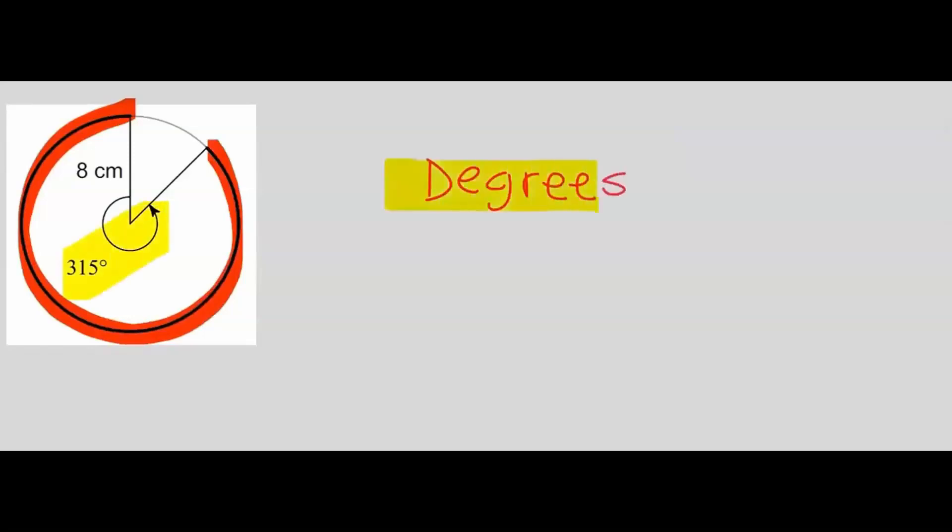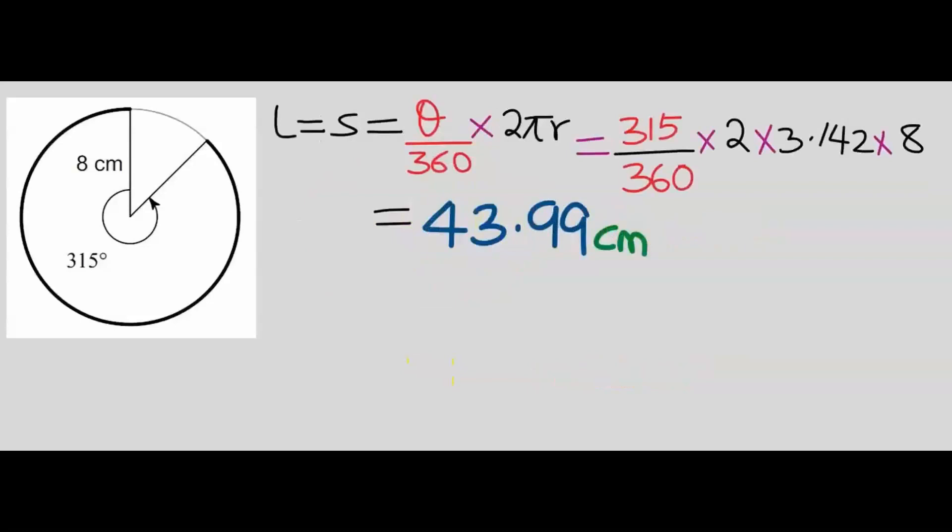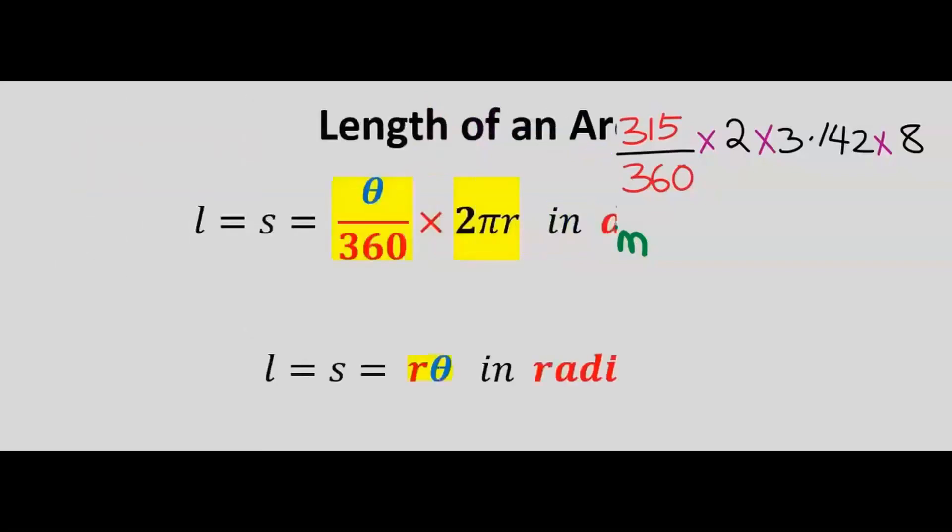The central angle is in degrees. Next, choose the right formula for central angles with degrees. If you substitute and solve carefully, the length of the arc is 43.99 centimeters, because the radius is in centimeters.